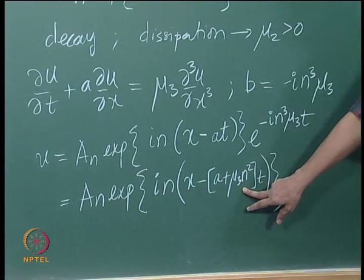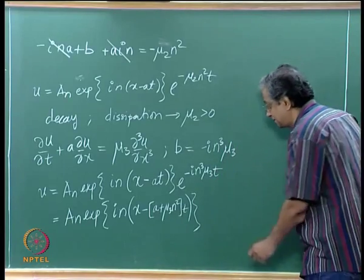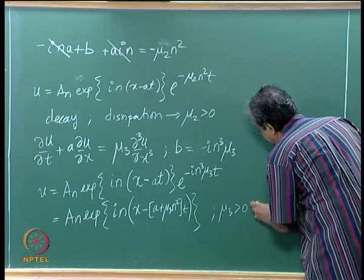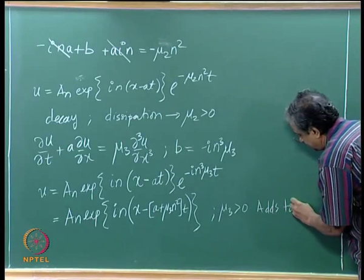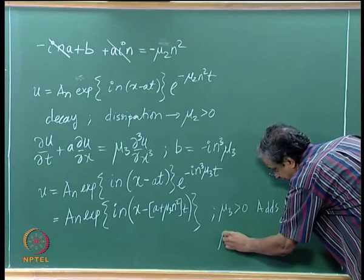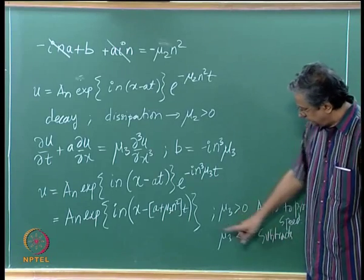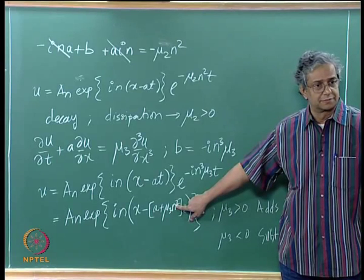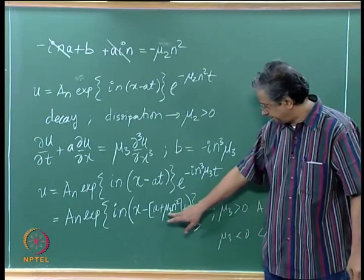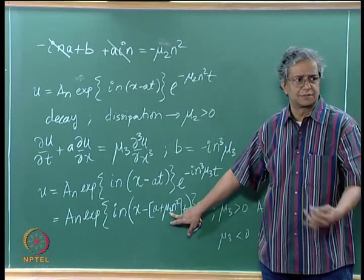The mu_3 term actually adds to the speed of propagation. If mu_3 > 0, it adds to the propagation speed; if mu_3 < 0, it subtracts. But there is something worse: the speed that it adds depends on the frequency. So high frequencies will travel faster than low frequencies when mu_3 > 0.